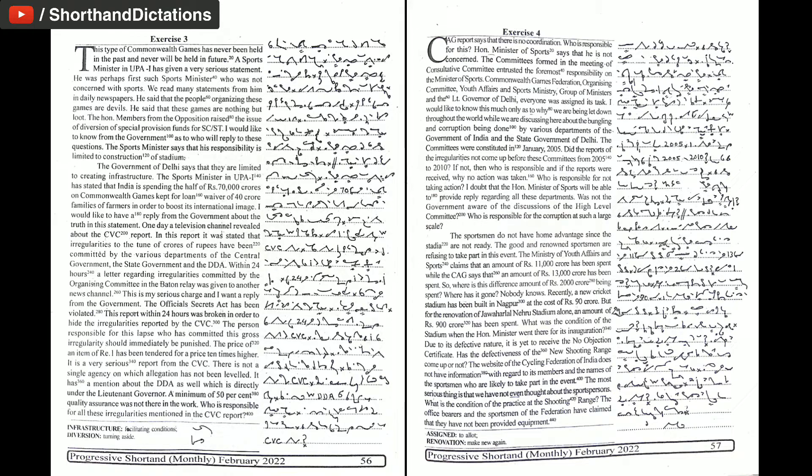Has the defectiveness of the new shooting range come up or not? The website of the Cycling Federation of India does not have information with regard to its members and the names of the sportsmen who are likely to take part in the event. The most serious thing is that we have not even thought about the sportspersons.